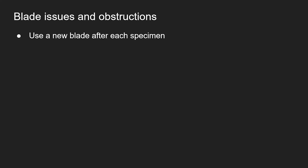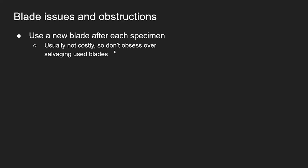Let's talk about what can happen to the blade. What I do to ensure the best cut possible is use a new blade for the Vibratome after every specimen I cut. No excuses. The blades we use are disposable razor blades — you can easily get a hundred or more and split them in half, making 200. They're not costly. I would not try to salvage used disposable razor blades if you want to ensure really good quality specimens.